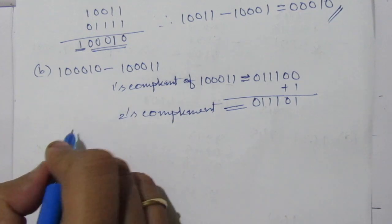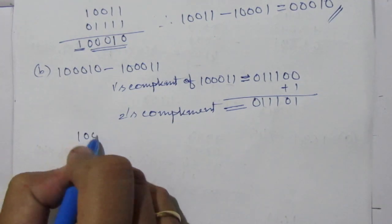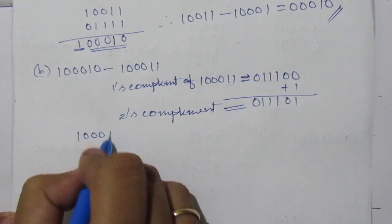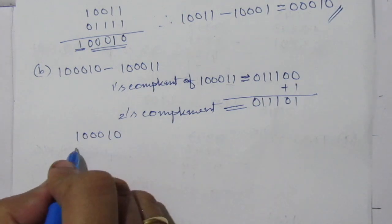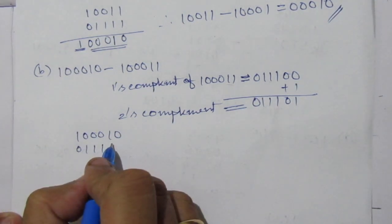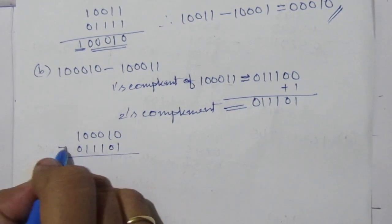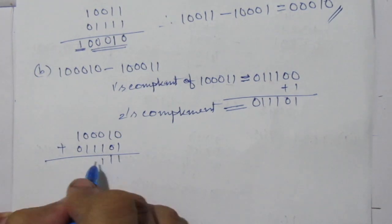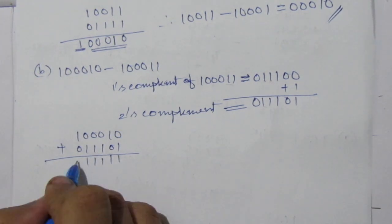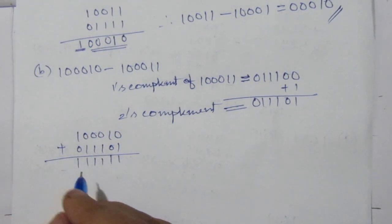Therefore, we add 100010 and 011101. We get 111111. There is no carry.